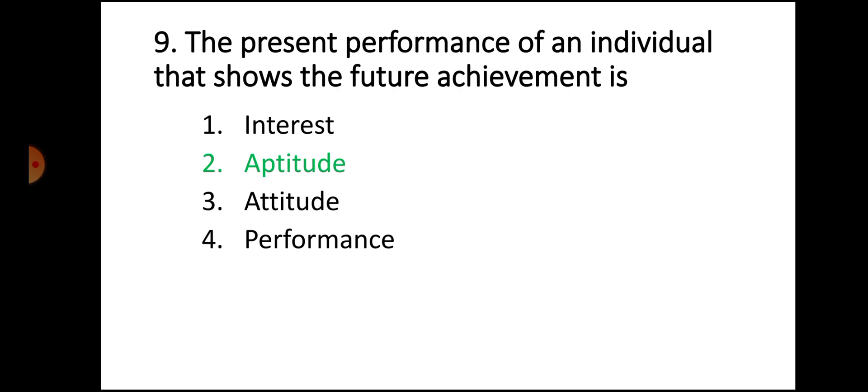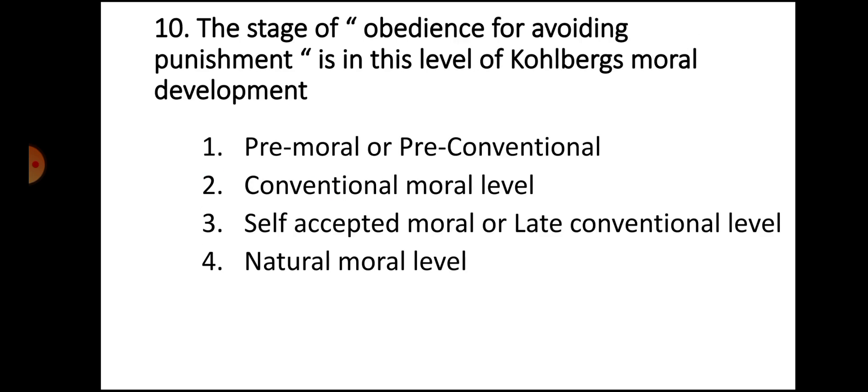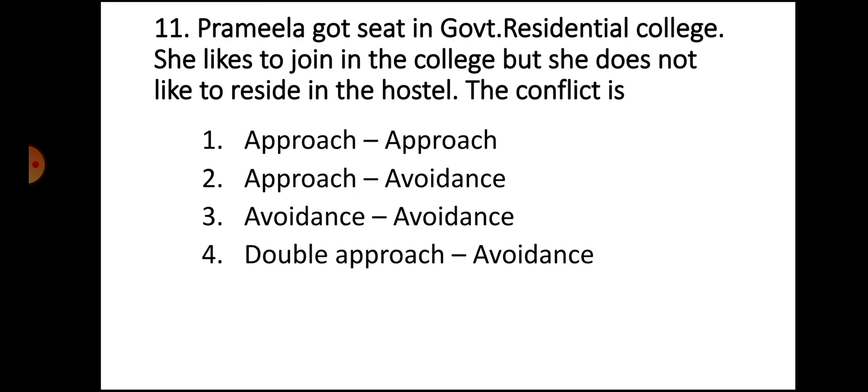Question number 10: The stage of obedience for avoiding punishment is in this level of Kohlberg's moral development. Option 1 pre-moral or pre-conventional, Option 2 conventional moral level, Option 3 self-accepted moral or late conventional level, Option 4 natural moral level. The correct answer for this question is Option 1, pre-moral or pre-conventional.